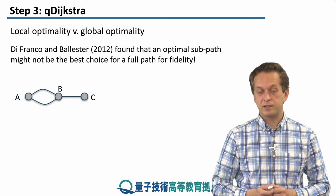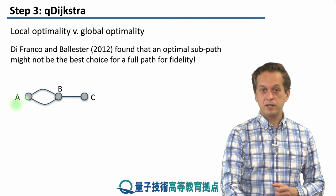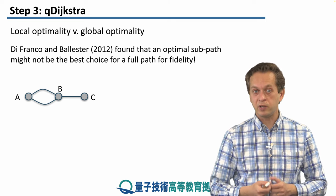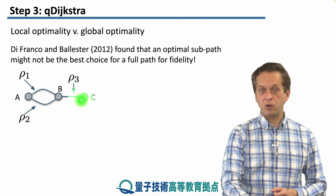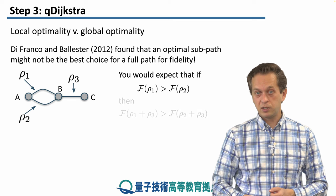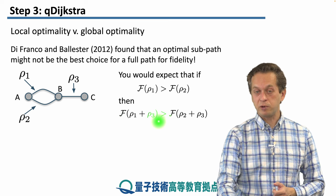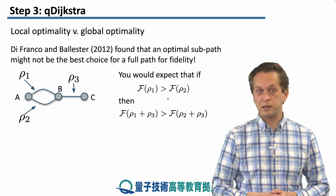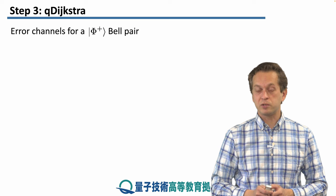What do we think happens in the following scenario? We have three nodes A, B, and C, and we're trying to establish entanglement between A and C. The double edge between A and B means we can either choose state rho1 or rho2 to establish entanglement between A and B. One would expect that if the fidelity of rho1 is larger than that of rho2, then the end-to-end fidelity via rho1 and rho3 would also be larger than via rho2 and rho3. This is, in fact, the wrong answer — it's not necessarily true.